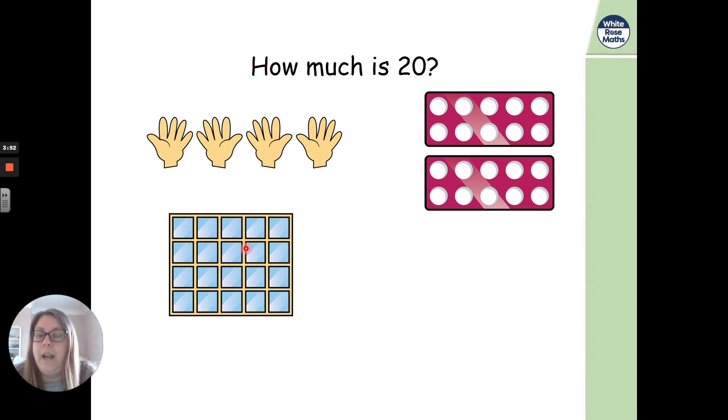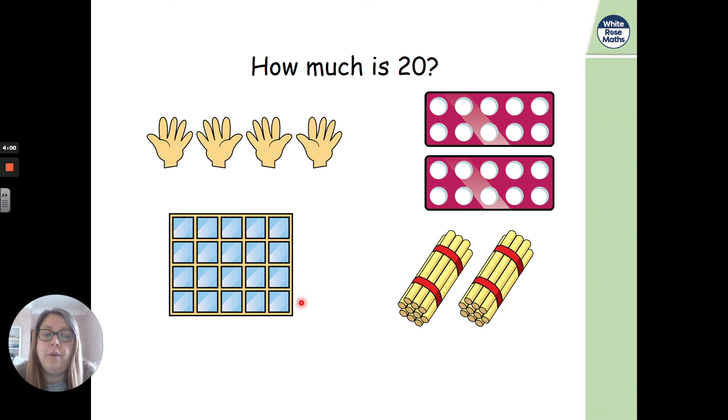Then we could represent it like our tens frames, okay? But they look like windows, don't they? We've got a full tens frame at the top and a full tens frame at the bottom. And then we could represent it with two lots of 10 for our sticks. So 20 is made up of two tens, isn't it? 10 add 10. And we'll be looking at a little bit more tomorrow in terms of tens and ones.